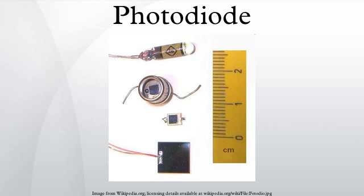Other modes of operation: Avalanche photodiodes have a similar structure to regular photodiodes, but they are operated with much higher reverse bias. This allows each photo-generated carrier to be multiplied by avalanche breakdown, resulting in internal gain within the photodiode, which increases the effective responsivity of the device.